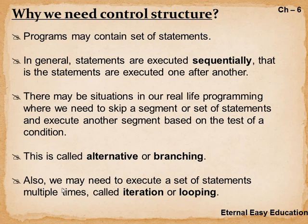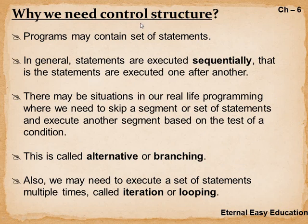We may also need to execute a set of statements multiple times — this is called iteration or looping. Remember the Fibonacci series: starting with zero and one, the addition is done repeatedly. Zero plus one is one, one plus one is two, and so on. That repeated addition is the working principle of iteration or looping. So, to handle real-time requirements while writing programs, we need alternative/branching or iteration/looping control structures.